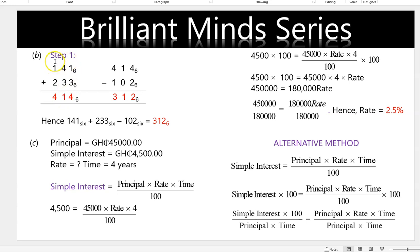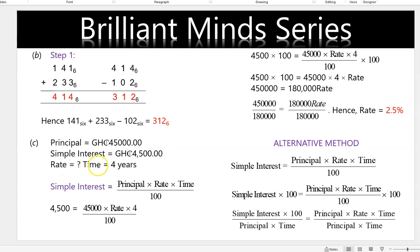So 1 plus 1 is 2, and 2 plus 2 is 4. Next step: 414 base 6 minus 102 base 6. So 4 minus 2 gives us 2, 1 minus 0 is 1, 4 minus 1 is 3 base 6. Hence 141 base 6 plus 233 base 6 minus 102 base 6 equals 312 base 6.